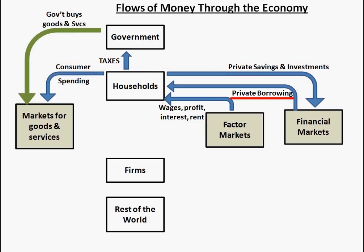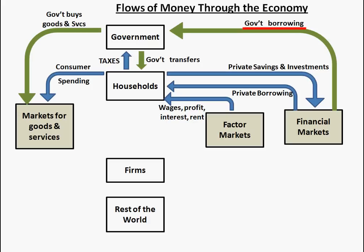Sometimes households don't quite have enough money to accomplish everything they want, and they will borrow money — for example, using a credit card, a car loan, or a mortgage on a new house. All this is private borrowing, and the money comes from the financial markets. We consider that borrowing to be negative savings, so when you repay those loans, that is considered savings.